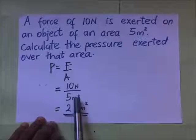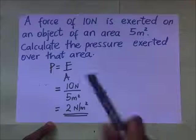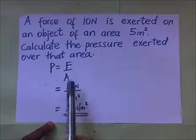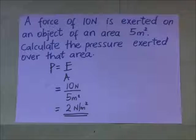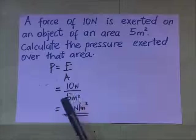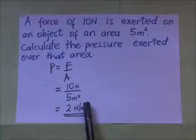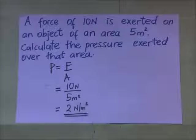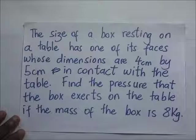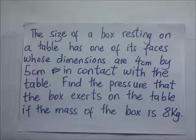Should you be given a question where instead of giving you the force directly you've been given mass, you're supposed to first find the force — we know that force equals mass times acceleration. Should you be given a question where the area is given in units other than meters squared, you have to convert them to meters squared, because the SI unit for pressure is Newtons per meter squared. Right here they're telling us that a box resting on a table has one of its faces with dimensions 4 centimeters by 5 centimeters in contact with the table. Find the pressure that the box exerts on the table if the mass of the box is 8 kilograms.